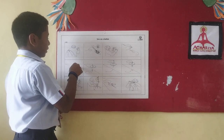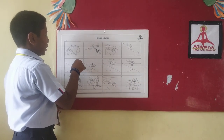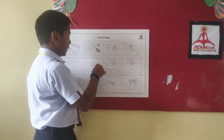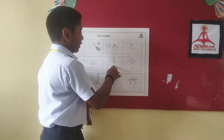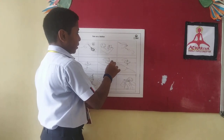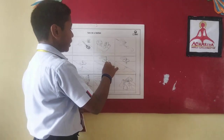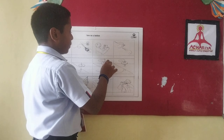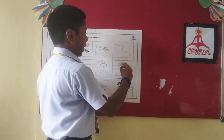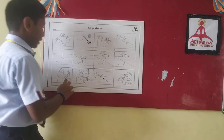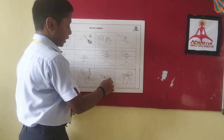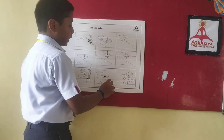He inserts the needle into the fabric. He inserts the needle into the needle hole of the button. He touches the button. He keeps the knot at the button.